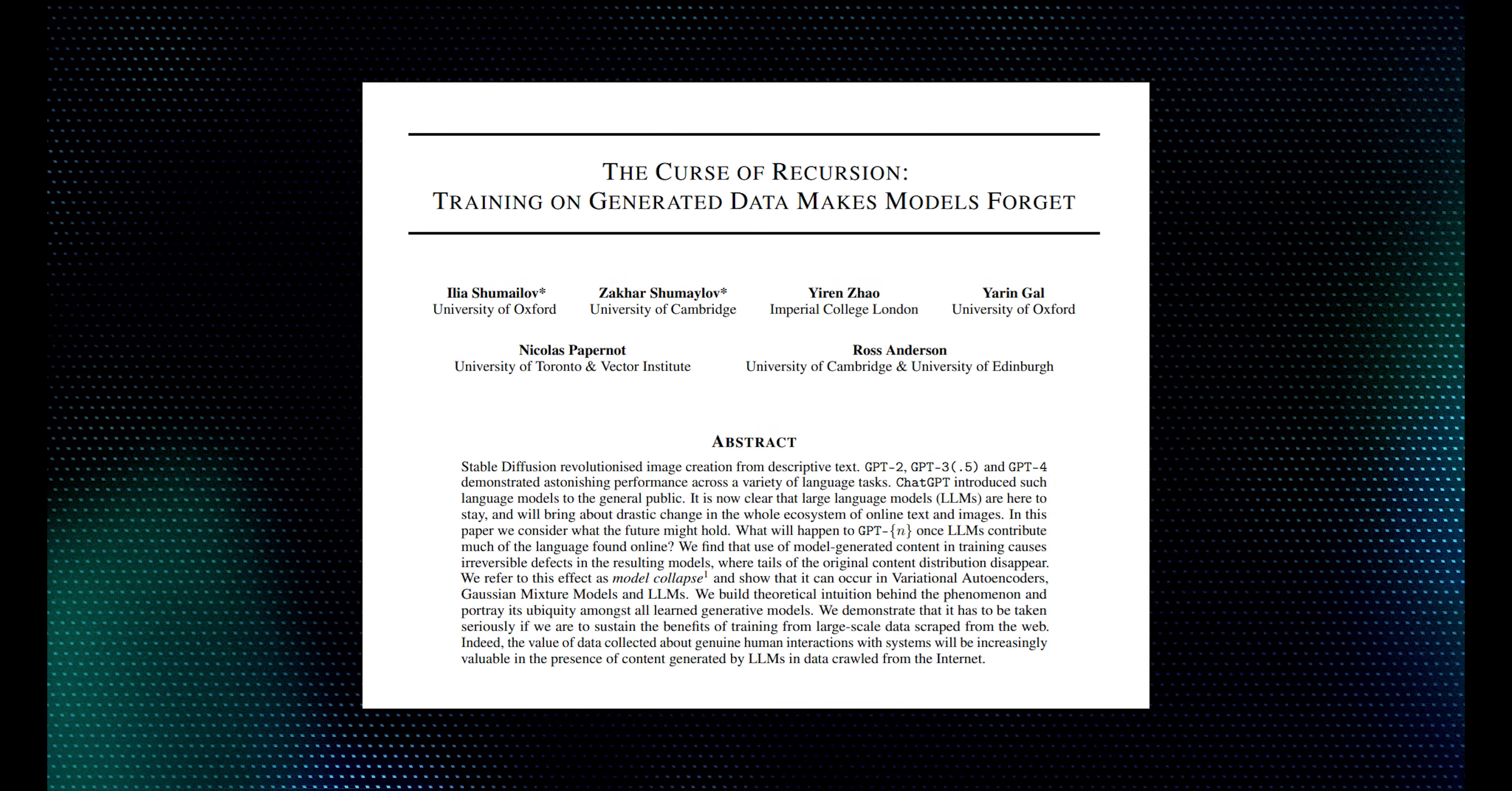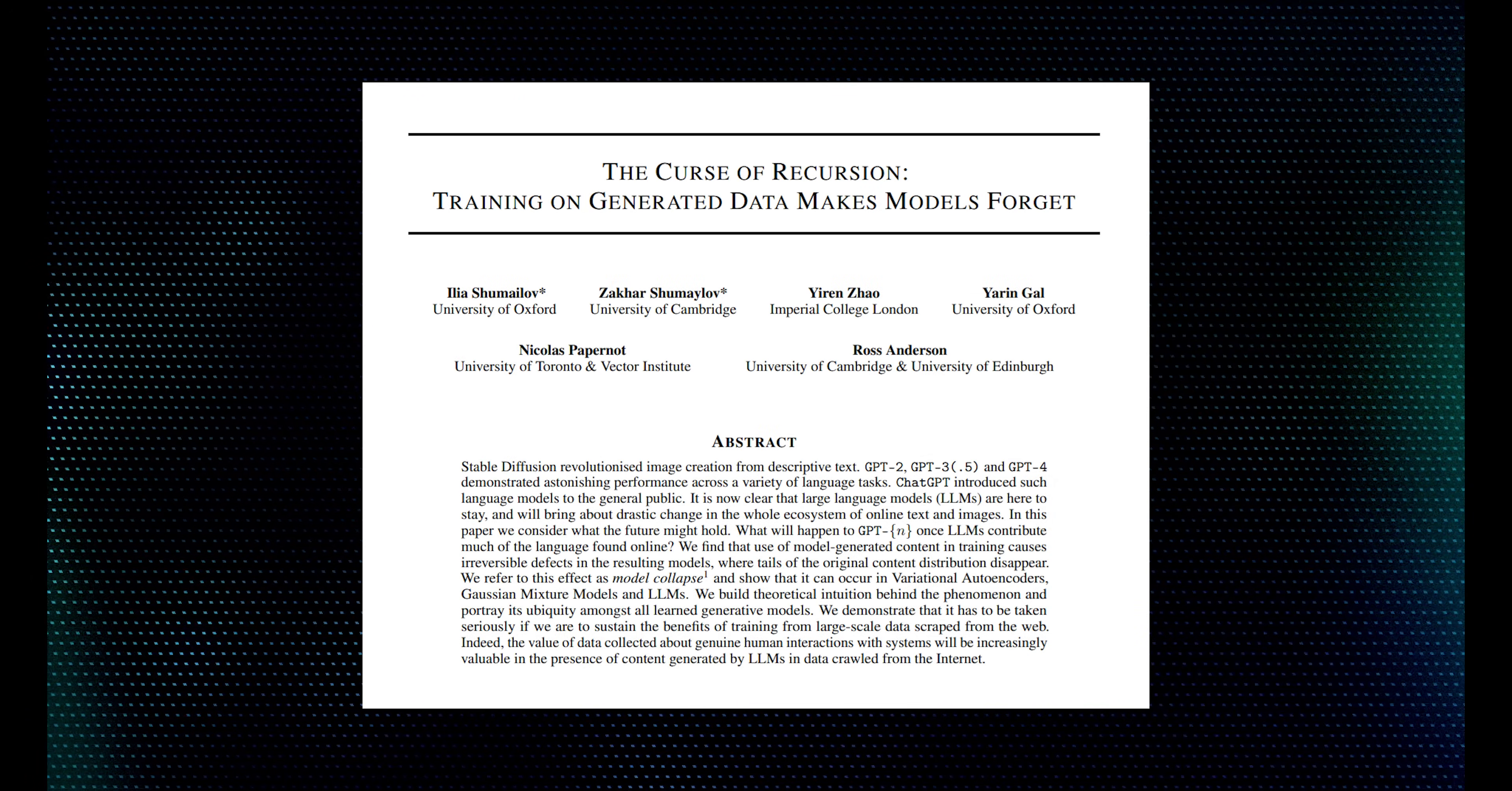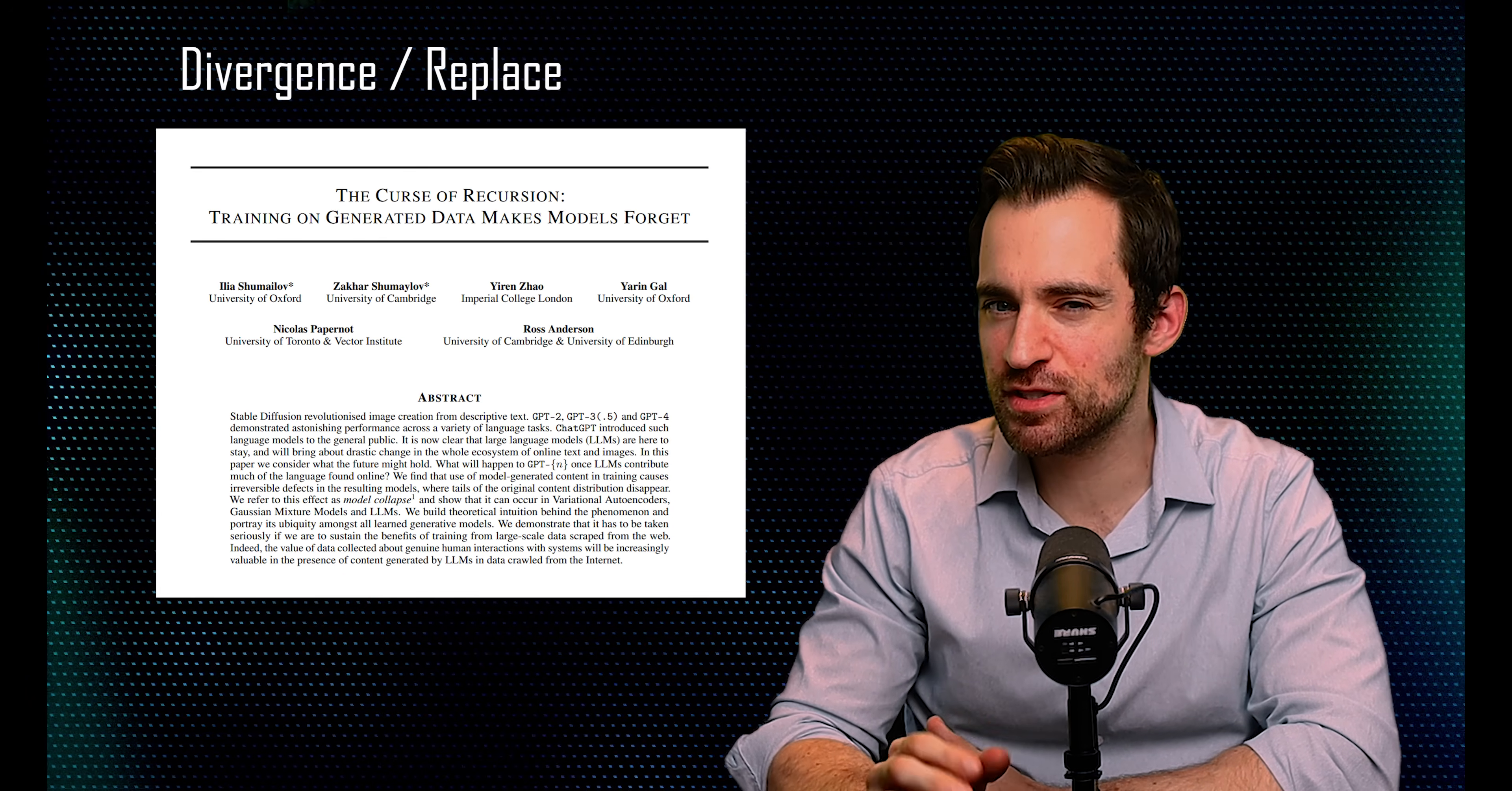Okay, so with this framework, let's get into a few of the papers. We'll start with the paper that introduced the concept of model collapse, called the Curse of Recursion, Training on Generated Data Makes Models Forget. This is the one that set off the debate, and I'd put it into the divergence to replace category, though it's not a perfect fit.